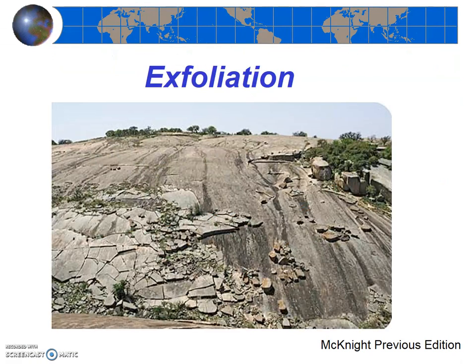The second type of mechanical weathering is exfoliation. In the skin care industry, exfoliation refers to the removal of an outer layer of dead skin cells. In geology and geography, exfoliation also refers to the breaking off of the outer layer of rocks. Exfoliation results in curved, concentric layers of rock breaking off from the bedrock below. It's sometimes called sheeting, as sheets of rock break away, and is also compared to the peeling off of layers of an onion.